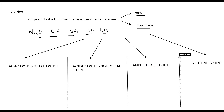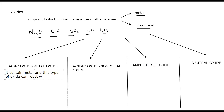What is the difference between these oxides? If we have a basic oxide or a metal oxide, first it contains metal. And this type of oxide can react with acid only — no reaction with alkali. So a basic oxide contains metal and can react with acid but cannot react with an alkali.